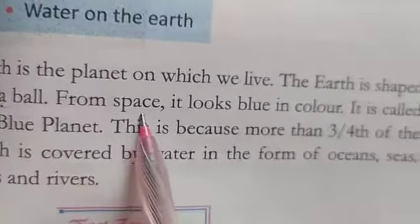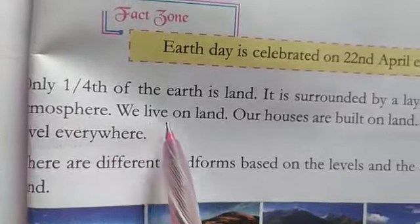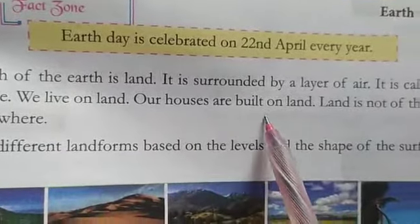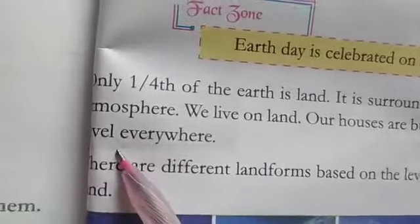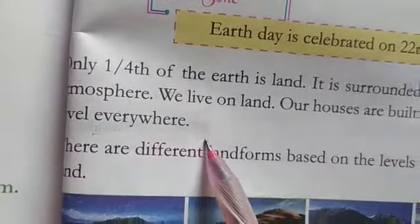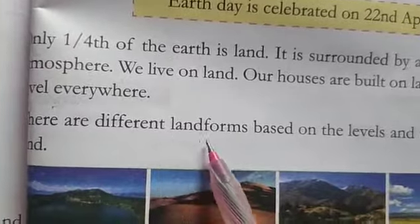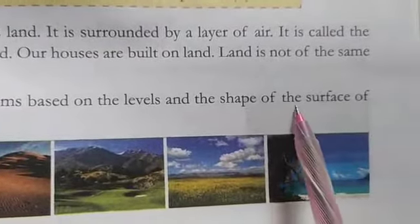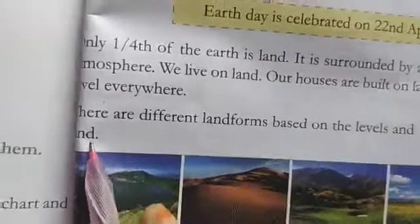Only one-fourth of the Earth is land. It is surrounded by a layer of air called the atmosphere. We live on land. Our houses are built on land. Land is not of the same level everywhere. There are different landforms based on the levels and the shape of the surface of the land.